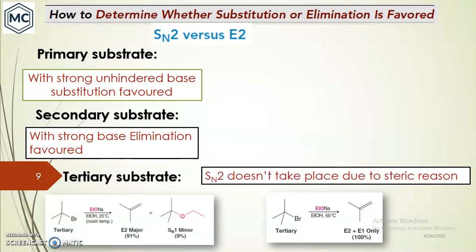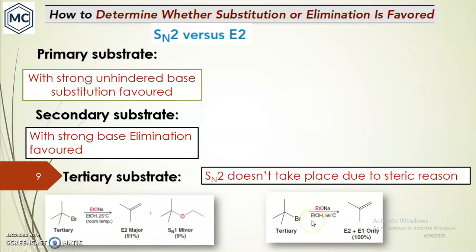For tertiary substrates, SN2 does not take place because backside attack is not possible due to steric hindrance. So in tertiary substrates the majority of the product will be the eliminated product. At low temperature it follows E2, and at high temperature elimination is also favored.